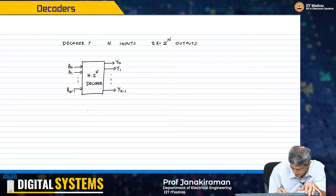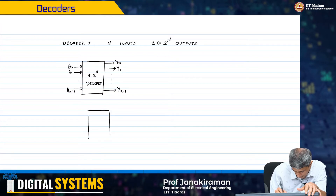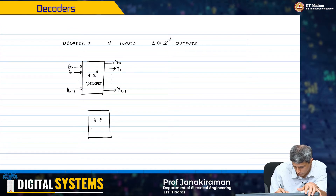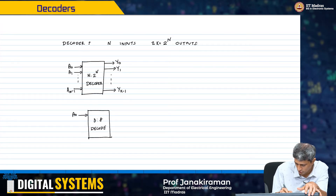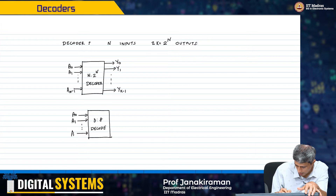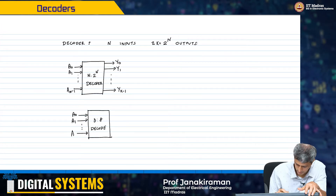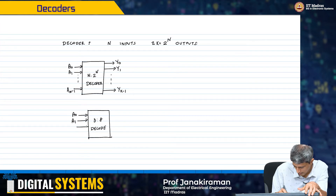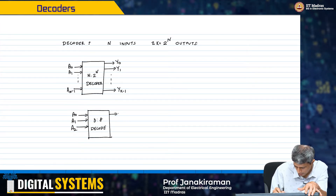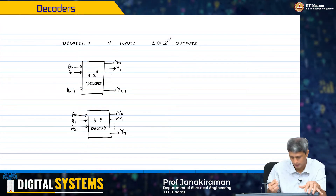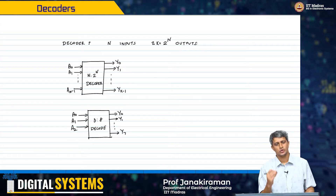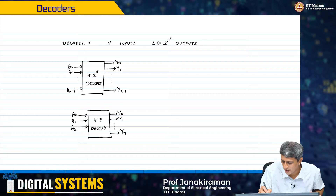Let us take a very simple example first: a 3-to-8 decoder. The inputs are a_0, a_1, a_2 — 3 bits — and we want to understand what the truth table of this 3-to-8 decoder should look like.